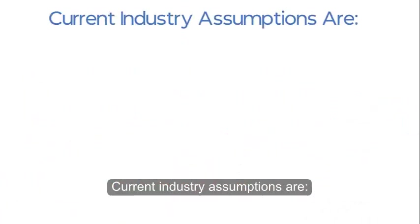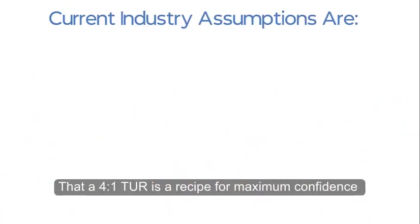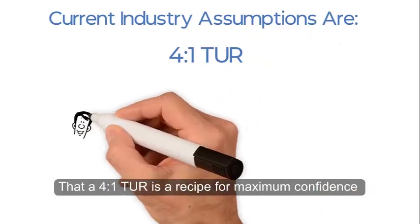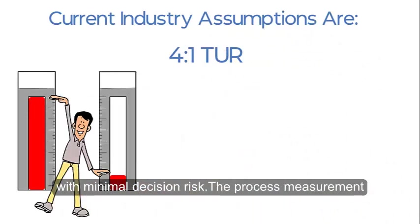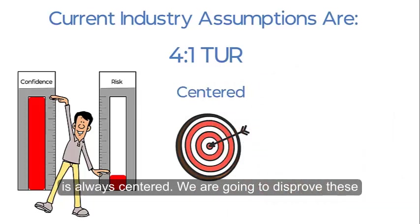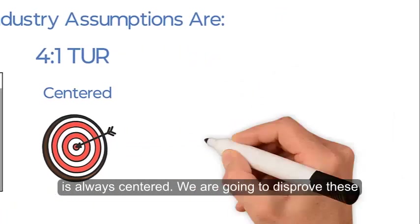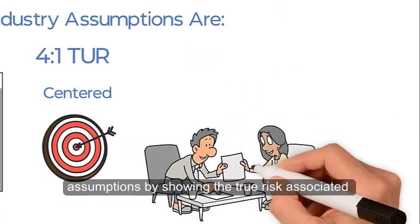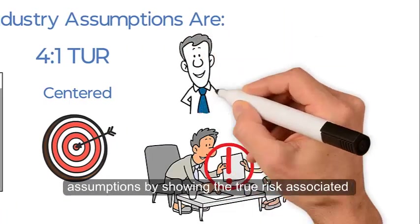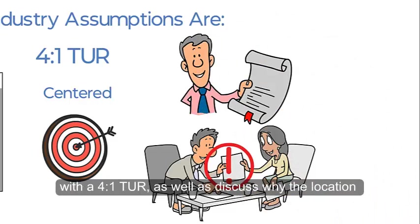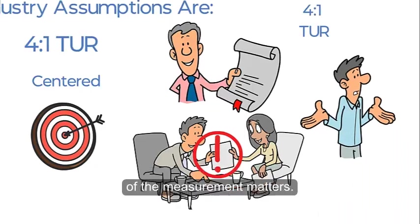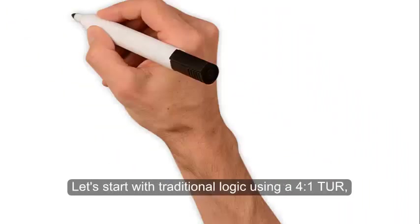Current industry assumptions are that a four-to-one TUR is a recipe for maximum confidence with minimal decision risk, and that the process measurement is always centered. We are going to disprove these assumptions by showing the true risk associated with a four-to-one TUR, as well as discuss why the location of the measurement matters.